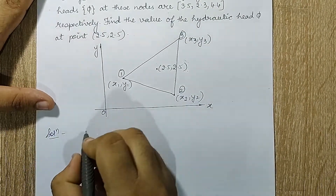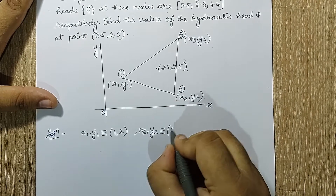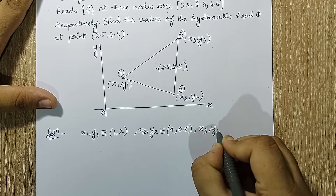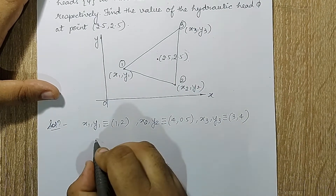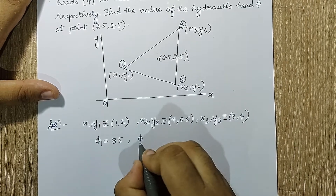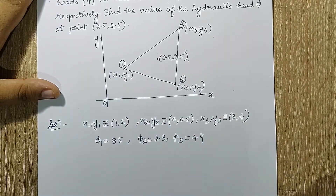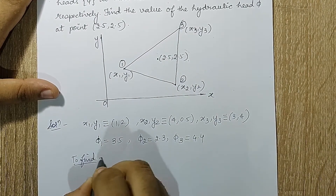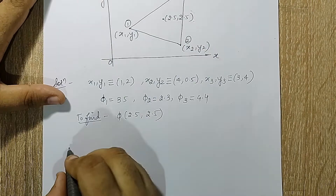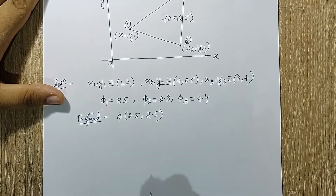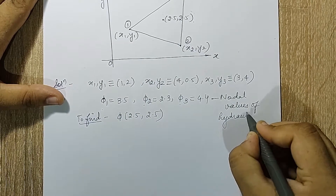We will start with the solution. x1, y1 is 1 comma 2; x2, y2 is 4 comma 0.5; and x3, y3 is 3 comma 4. These are the three coordinates given. The phi values at the nodes are: phi 1 is 3.5, phi 2 is 2.3, and phi 3 is 4.4. You have to understand that these phi values are the nodal values of hydraulic head — they are not the shape functions.